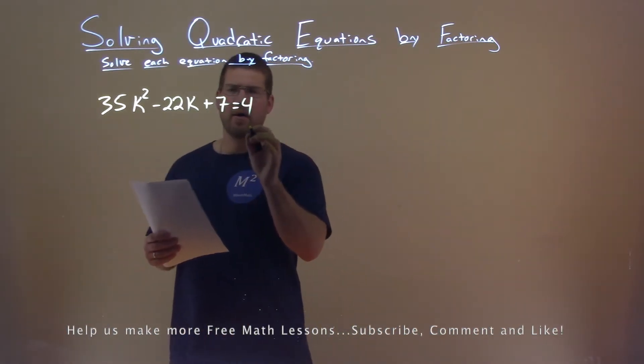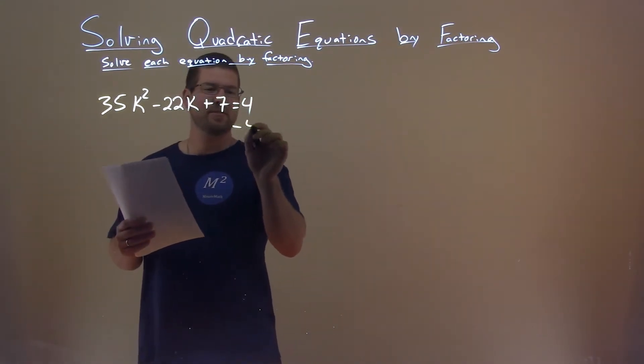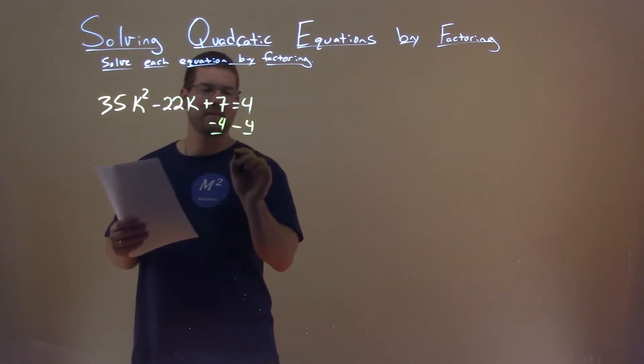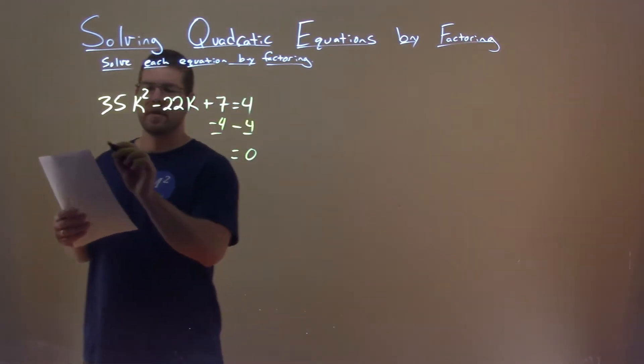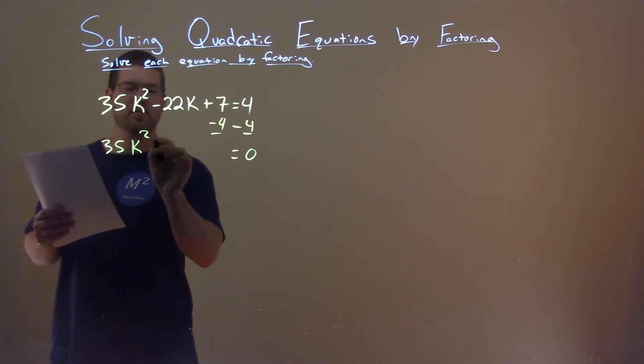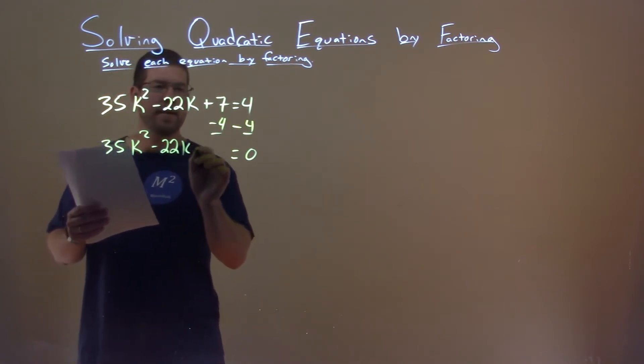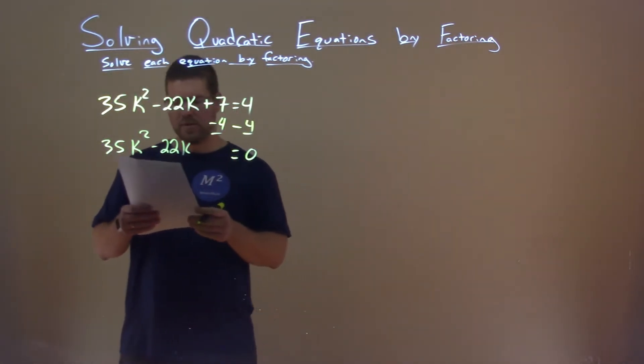Well, let's get the equation equal to 0, so let's subtract 4 from both sides. We're left with 0 here, the 35k squared comes down minus 22k, and then 7 minus 4 is good old 3.